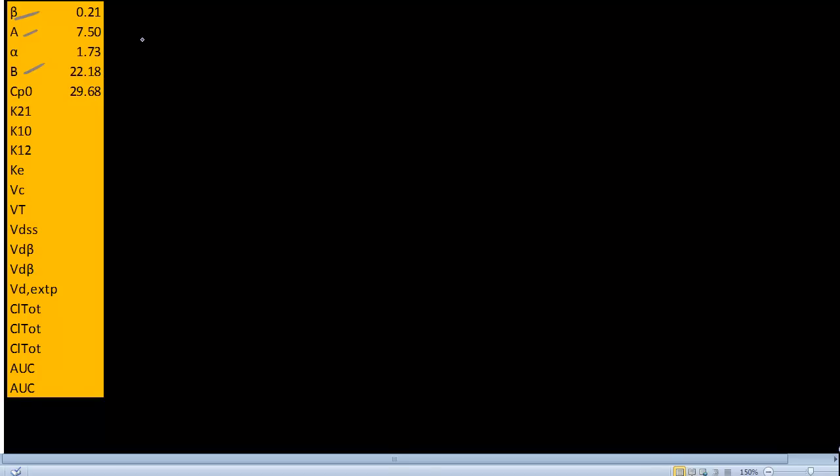Using this information we are going to calculate the micro constants. These are the micro constants: k21, k10, and k12. So k21 is equal to A times beta plus B times alpha divided by A plus B. What is A? A is 7.50 mg per liter.